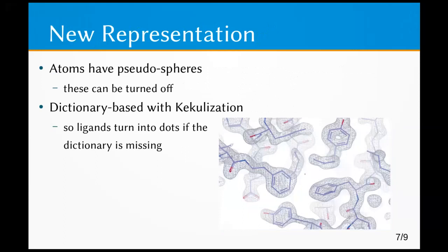There are new representation styles. If you use colour by chain, you can see kekulization of the molecule, including ligands. It's dictionary-based, using the new ACE drug style of representation of bond and kekulization information. If you don't have a dictionary for your ligand, it'll turn into dots — a useful indication that it won't be able to refine. I personally find that I now prefer the kekulized representation for sidechains, such as phenylalanines and tyrosines.